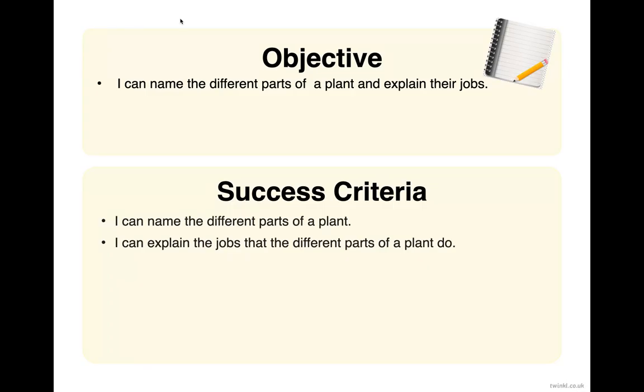Make sure you wrote down the objective: I can name the different parts of a plant and explain their jobs. By the end of today's lesson, you'll be able to tell me the different parts of the plant and their functions. Whenever you see the notebook and pencil emoji in this slide, that indicates for you to write down these notes.